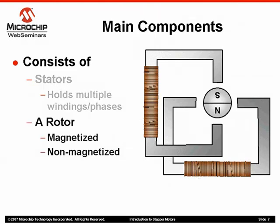The rotor is the actual rotating component on the motor. This can either be magnetized, as shown here, or non-magnetized, depending on the type of motor you select. We will discuss some of these different motor types later in this presentation.